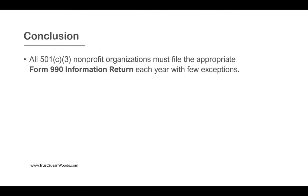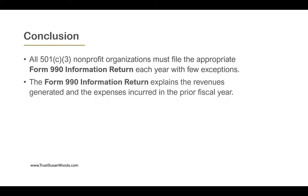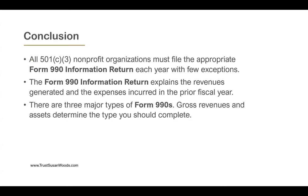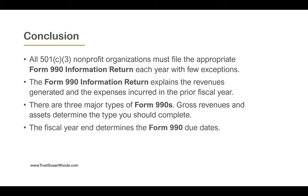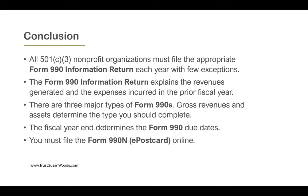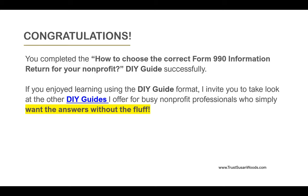Conclusion: All 501c3 nonprofit organizations must file the appropriate Form 990 information return each year with few exceptions. The Form 990 information return explains the revenues generated and the expenses incurred in the prior fiscal year. There are three types of Form 990s. Gross revenues and assets determine the type you should complete. The fiscal year end determines the Form 990 due dates. You must file the Form 990-N e-postcard online. Congratulations — you completed the How to Choose the Correct Form 990 Information Return for Your Nonprofit DIY guide successfully.